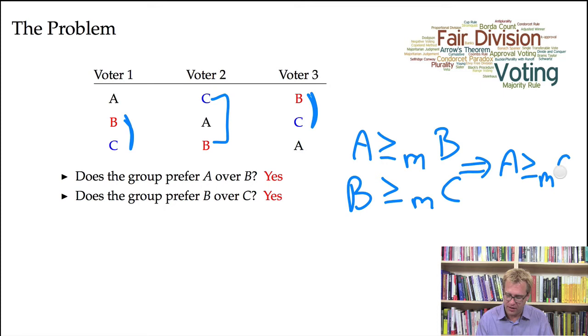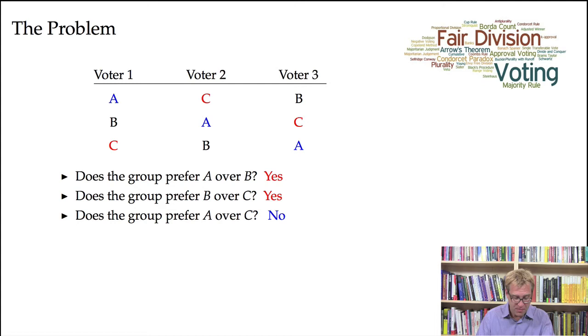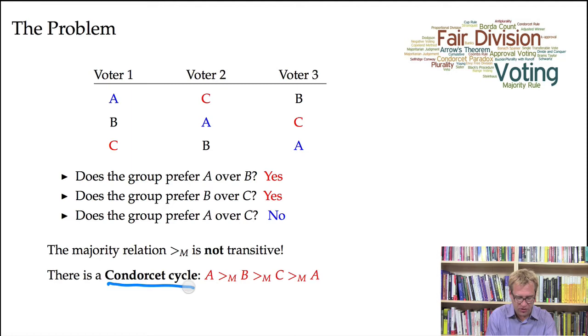And what should we conclude? Well, if the relation was transitive, we should have A is ranked above C. So that's the question. Is our relation transitive? Well, in fact, it's not transitive, because a majority of people actually prefer C over A. So voter one prefers A over C, but voter two and voter three prefer C over A. So in fact, our majority ordering is not transitive. And this is the Condorcet paradox. The majority relation is not transitive. There's what's called a Condorcet cycle.